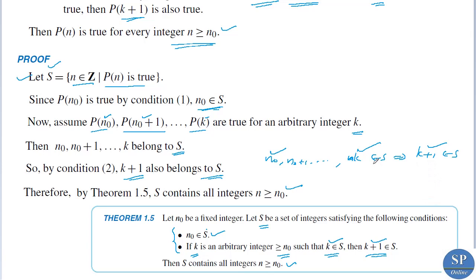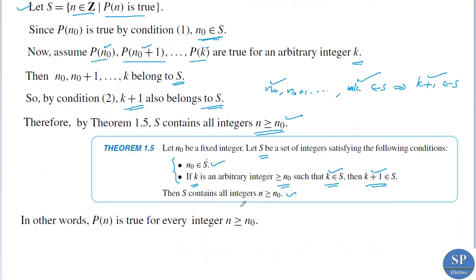We can say that S contains all integers n greater than or equal to n₀. That means S contains n₀, n₀+1, and so on. Since S is defined as the set of all n such that P(n) is true, we can say that P(n) is true for every integer n greater than or equal to n₀.